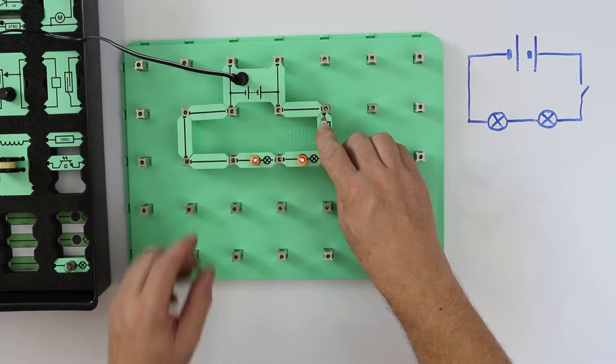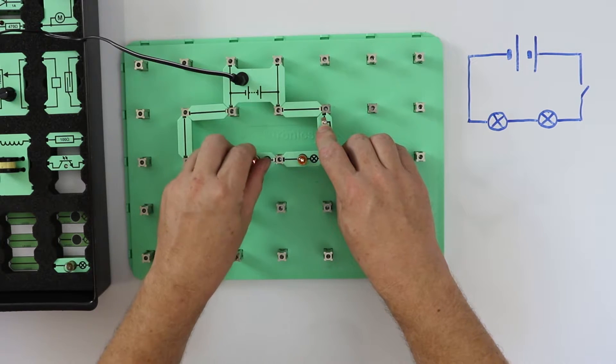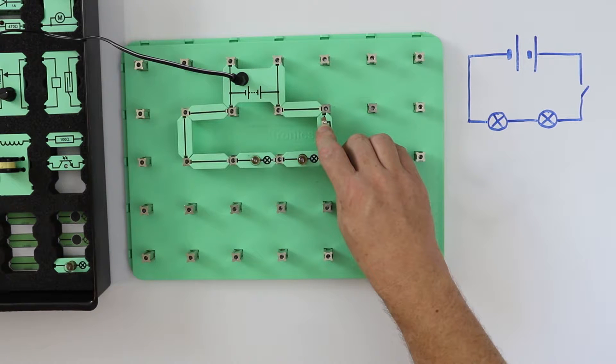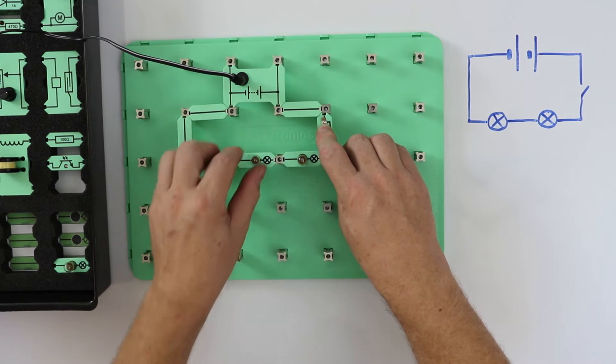What happens when a bulb is removed? We lose all the electricity.